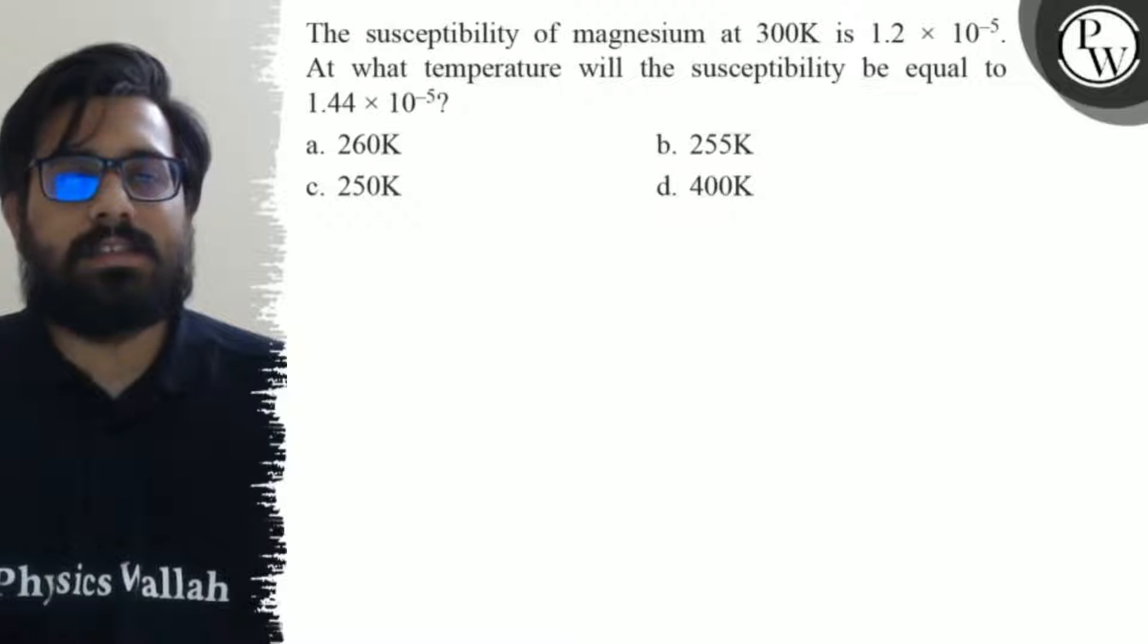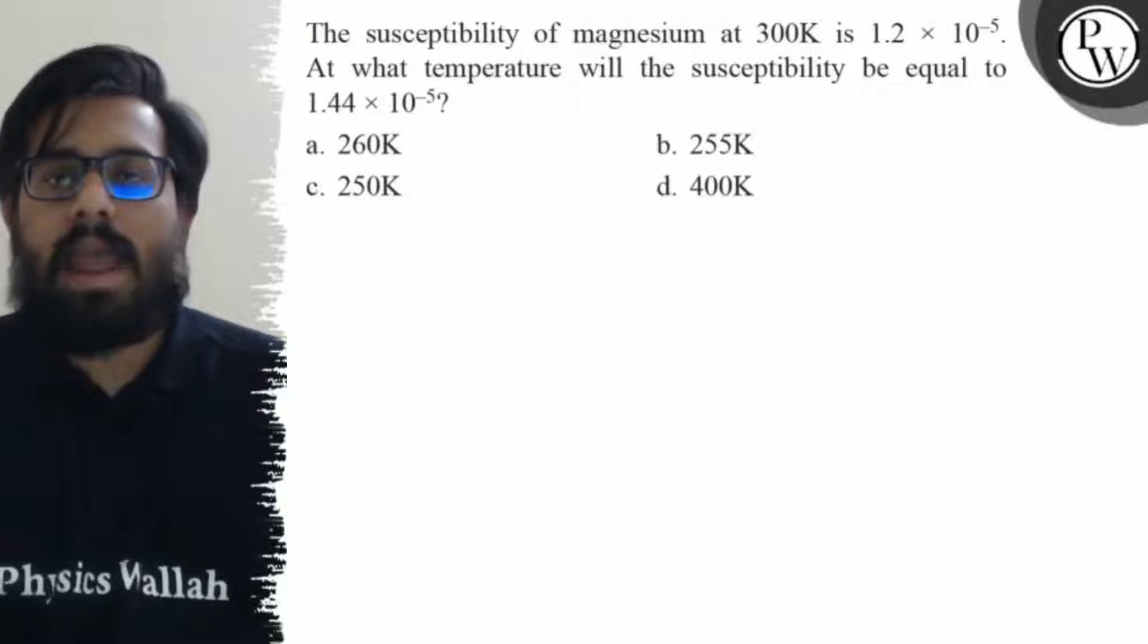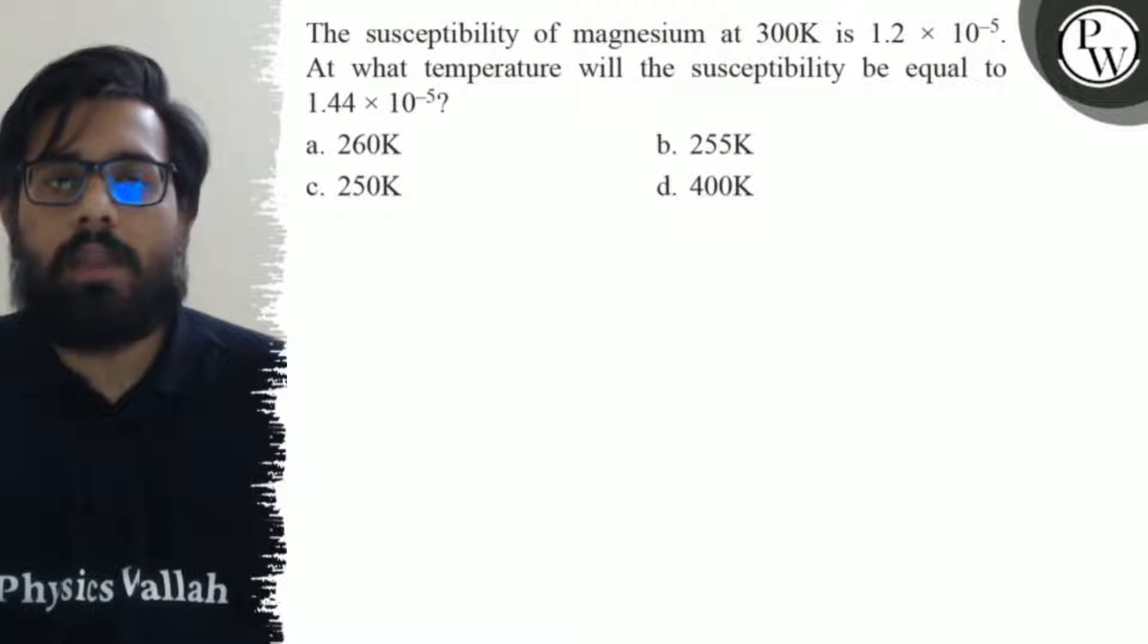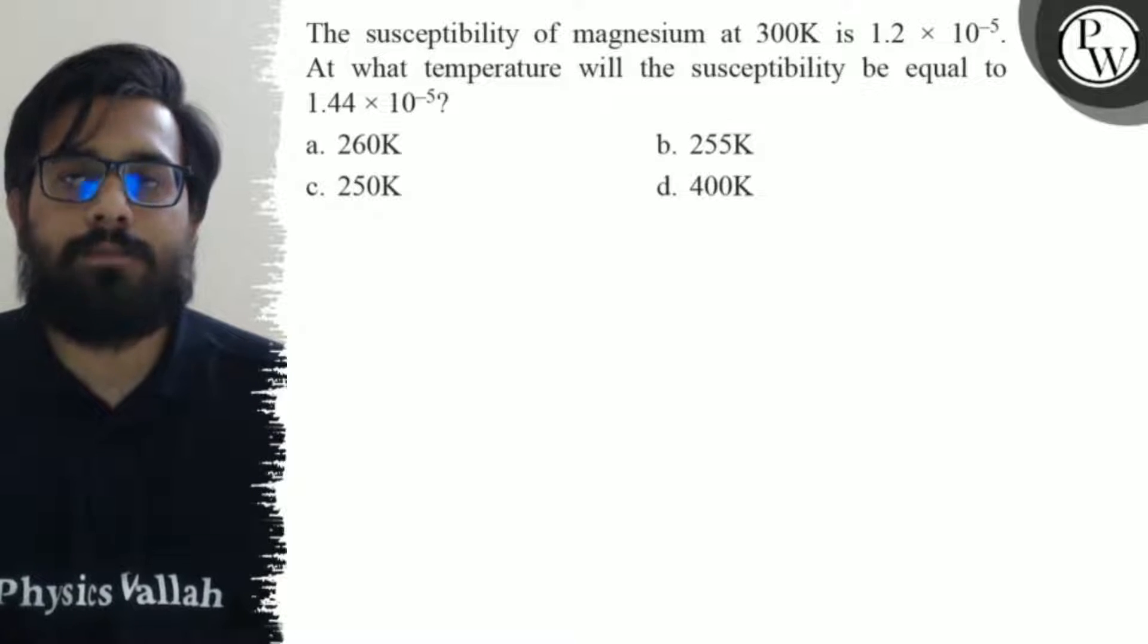Hello bachos. So let us see the question. The susceptibility of magnesium at 300 Kelvin is 1.2 × 10^(-5). At what temperature will the susceptibility be equal to 1.44 × 10^(-5)?